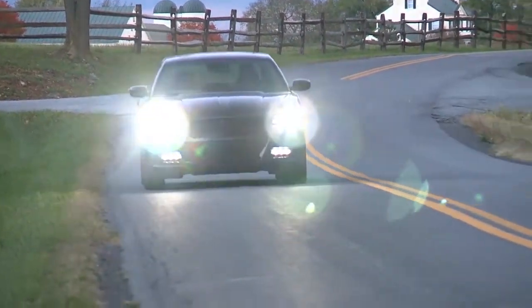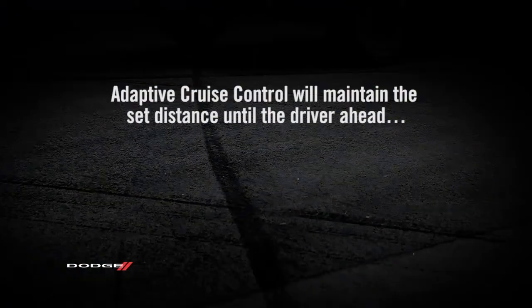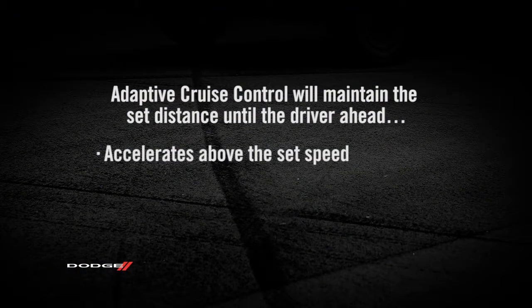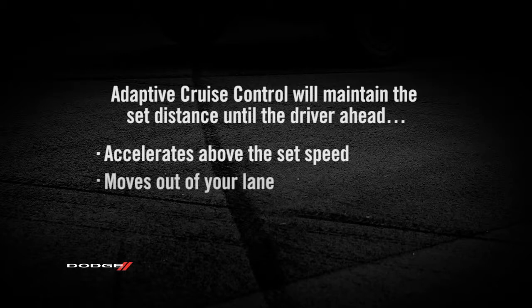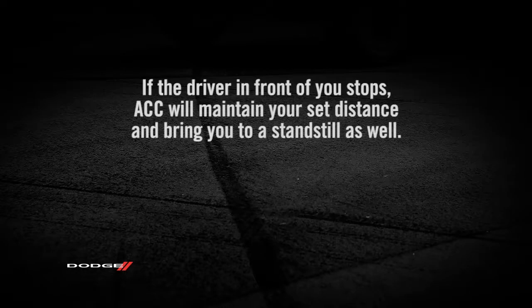You'll see the sensed vehicle indicator icon in the instrument cluster. The system will maintain the set distance until the driver ahead accelerates above the set speed, moves out of your lane, or until the system is manually disengaged.